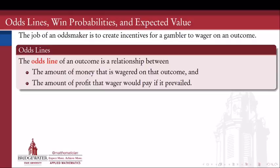The job of an odds maker, if I'm going to work to make book, is to create incentives for gamblers to come and wager on things. I want to set the odds in such a way that as many gamblers as possible believe it's worth it to them to take the gamble. If those gamblers are doing expected value calculations, odds makers kind of assume that's what they're doing and set the odds accordingly. They create what are called odds lines, which get published on websites and in some newspapers, especially for big things like the Kentucky Derby.